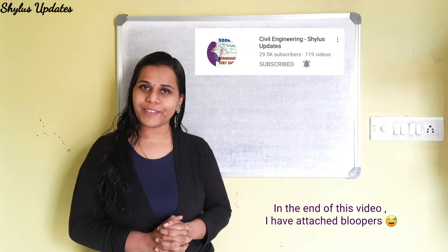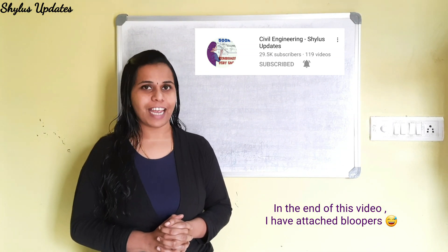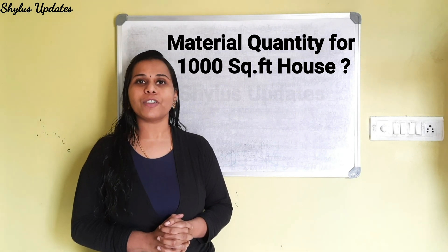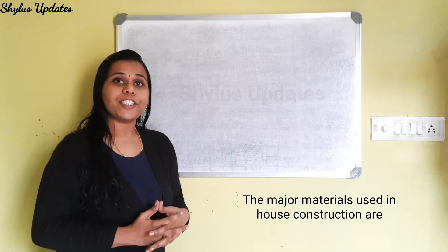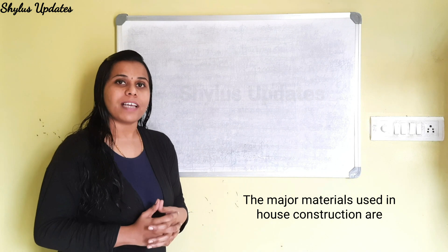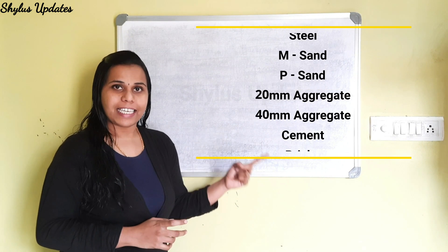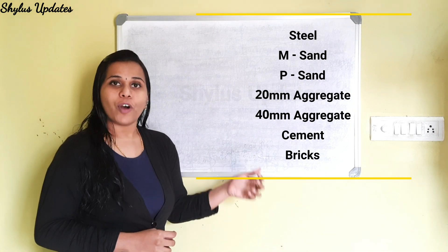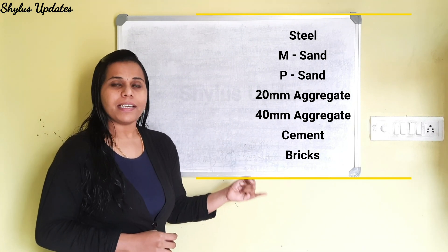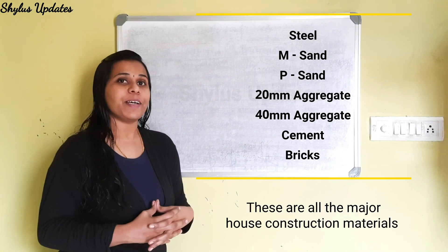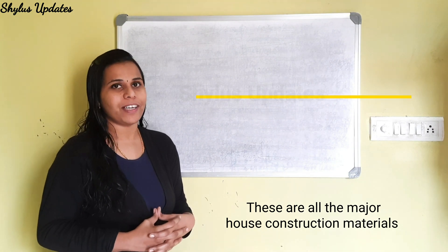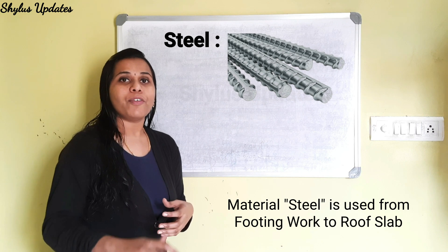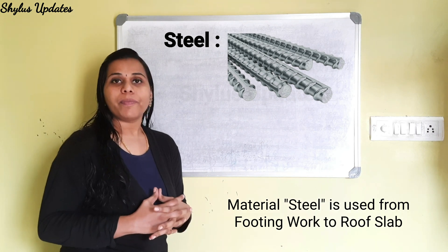Hello everyone, welcome to Civil Engineering Shilu's Updates. Material quantity for 1000 square feet house. The major materials used in house construction are Steel, MSAN, PSAN, 20mm aggregate, 40mm aggregate, cement, and bricks. These are all the major house construction materials. Steel is used from footing work to roof slab.